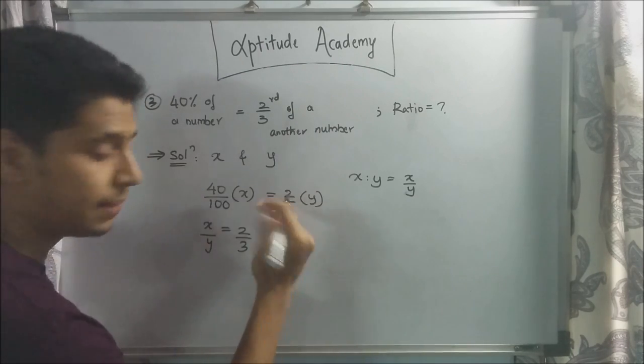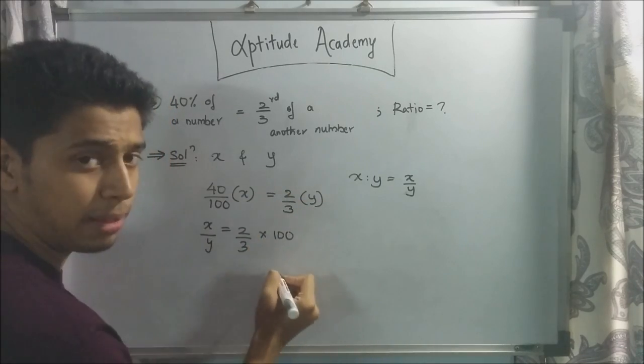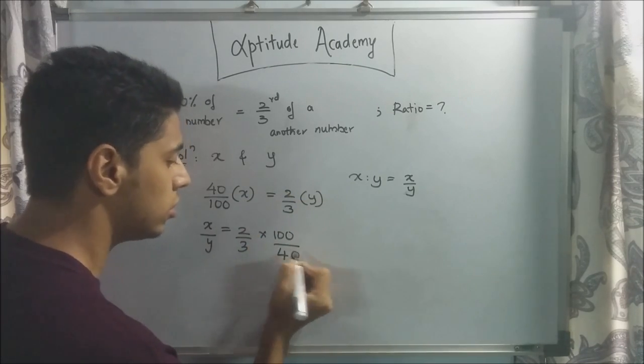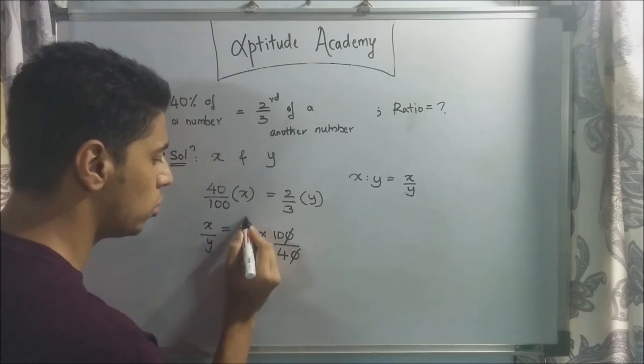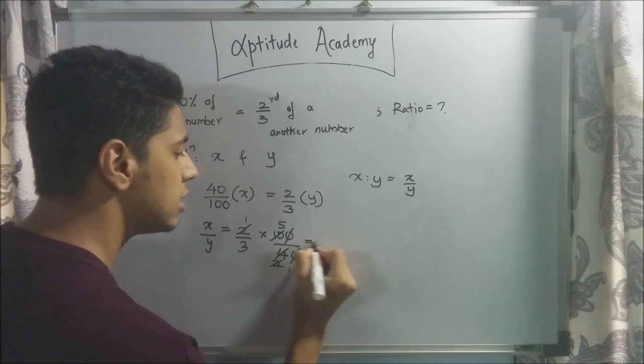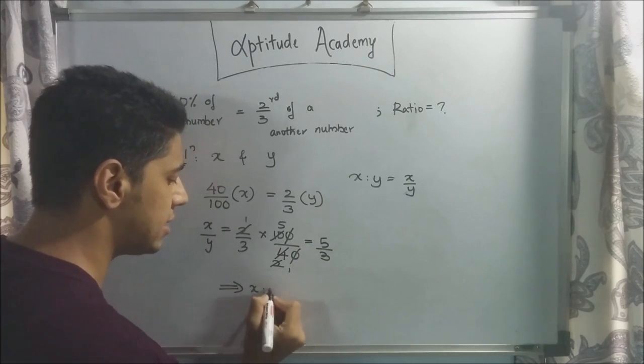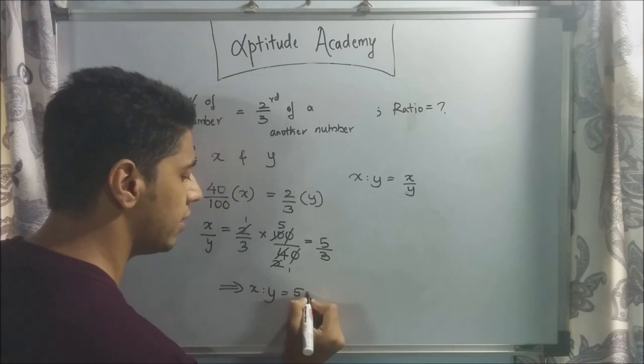If you take it, 100 will go on top and 40 will come down below. Cancel one zero, cancel one zero. 2 times 2 is 4. 2 times 5 is 10. So this becomes 5/3. Implies, the ratio of x is to y is equal to 5 is to 3. This is your final answer.